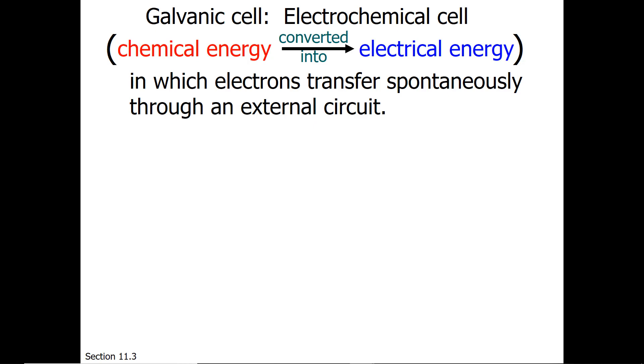In a galvanic cell, electrons transfer spontaneously, but they do so through an external circuit. And of course, we call electrons moving through a wire electricity.